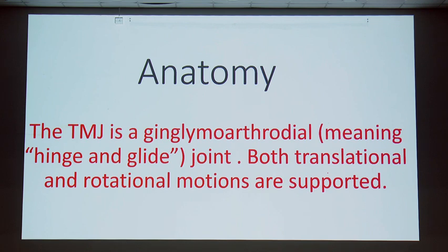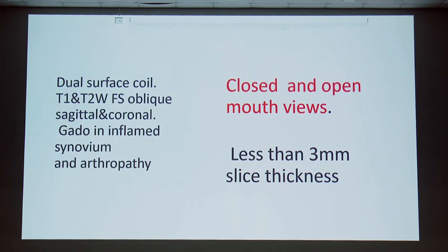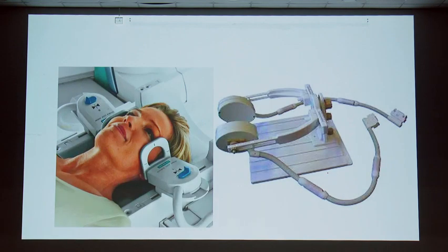Basically, even though we call it a synovial joint, it is called a ginglymoarthrodial joint, meaning two important movements are possible: one is hinge and the other is glide — translational as well as rotational motions are supported. We use surface coils and loop coils, T1, T2, oblique sagittal, and coronal sequences. Whenever inflammation or tumor is suspected, we should use gadolinium contrast. Closed and open mouth views are a must, and we have to do real-time dynamic studies to evaluate translation. Less than 3mm slice thickness is mandatory.